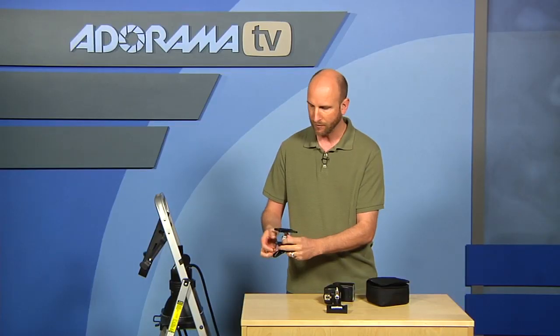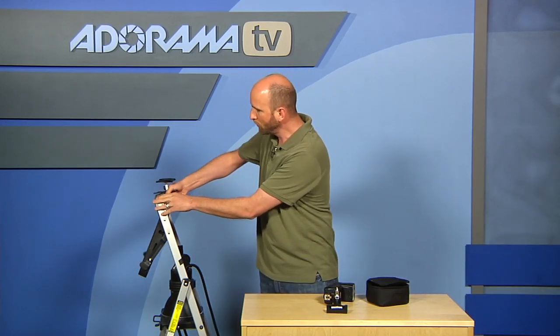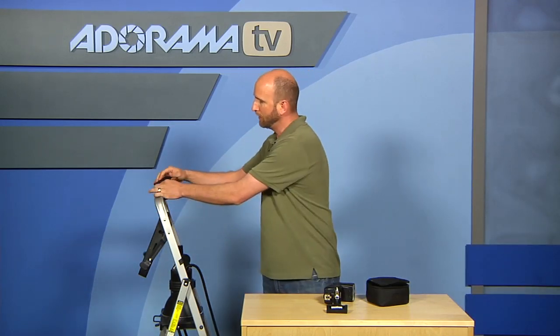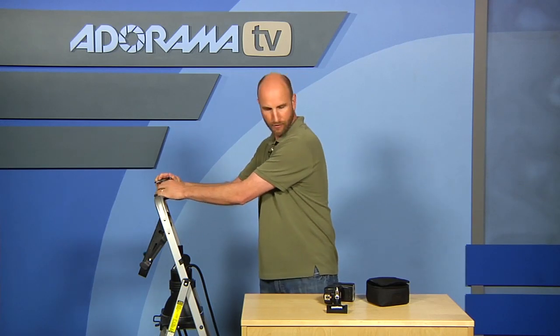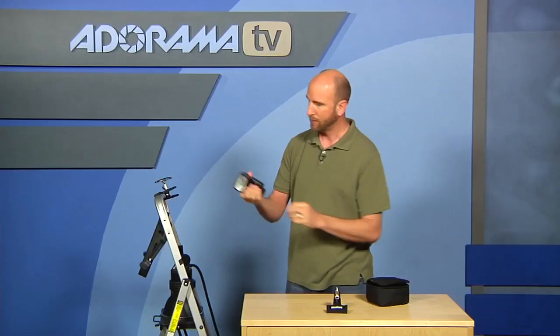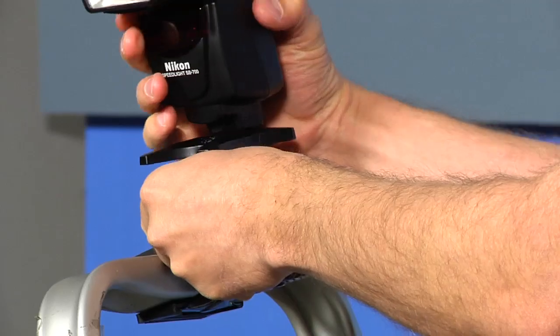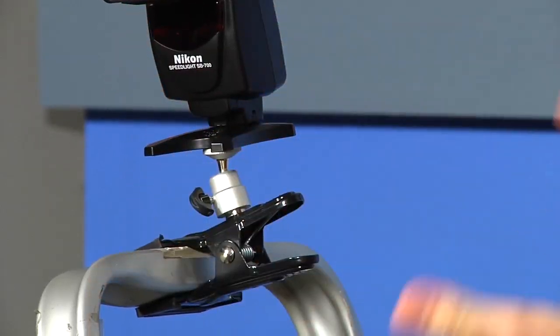So once I have that on there, what I'll do is I'll again take this and I'll just clamp it right to the top of this ladder. And then I can position this where I want, lock that down there, make sure it's nice and snug. And once I have that on there, I just take my flash, mount it on there, and now I can move my flash anywhere I want. And there you have it.